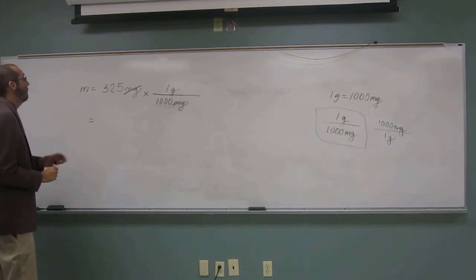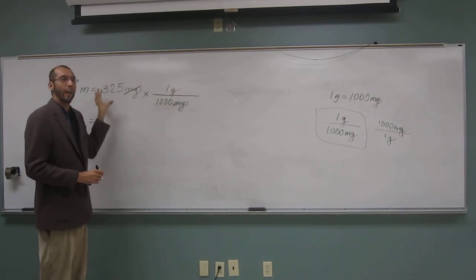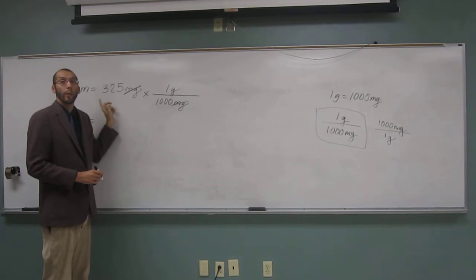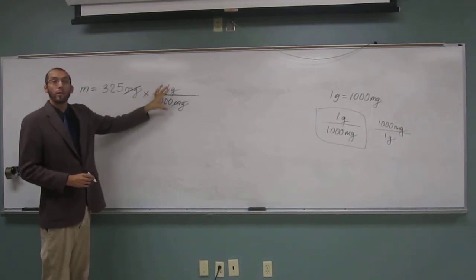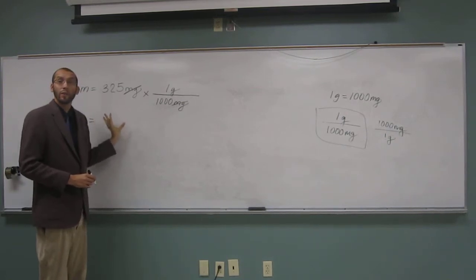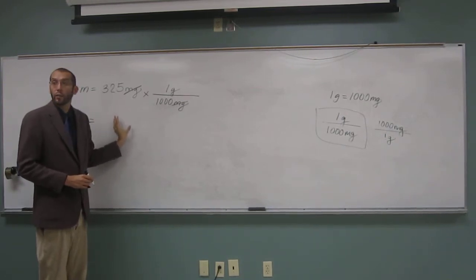So how many significant figures does my calculation have to have? 3. So it's got to be 3. The one thing you've got to remember is those conversion factors never play into the number of significant figures that you have in your final answer.